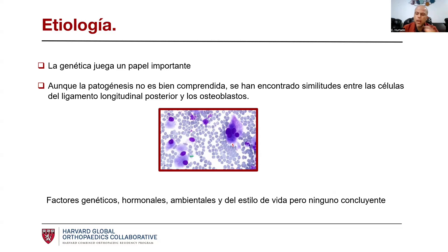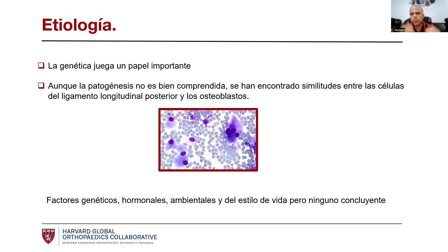Algunos factores hormonales: en diabéticos no insulinodependientes y en pacientes con índice de masa corporal elevado se ha observado esa relación genética. Se han estudiado genes como el colágeno A2 y algunas BMP que estimulan la calcificación o el cambio de estructuración de esta estructura. También hay factores ambientales como consumo de pepinillos, consumo de arroz, jornadas largas laborales, trabajos nocturnos, pero a final de cuentas no hay nada concluyente.